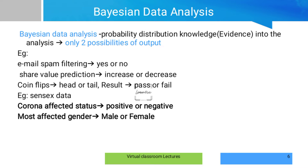Another example is share value prediction. Past share values serve as evidence. Based on one week of a particular share's movement, we predict whether tomorrow's share value will increase or decrease. Also, in corona data analysis, the output is positive or negative status, and most affected gender — male or female. These are all two-option outputs in Bayesian data analysis.